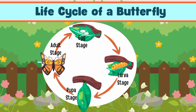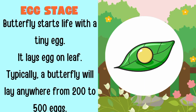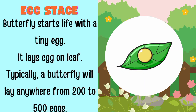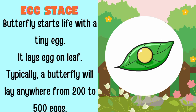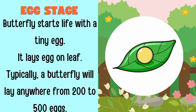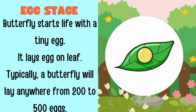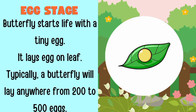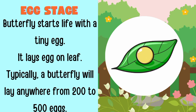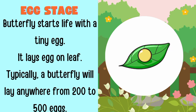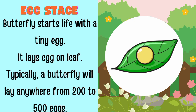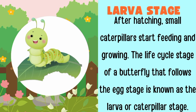It has four stages of life cycle. Its first stage is called the egg stage. The butterfly starts life with a tiny egg. It lays eggs on a leaf — about 200 to 500 eggs.